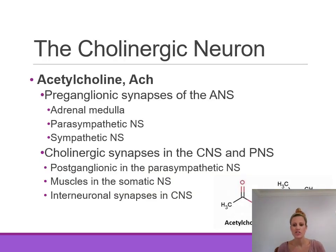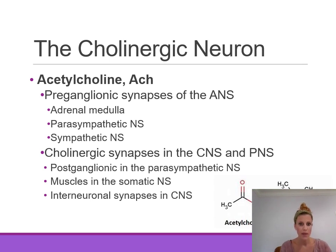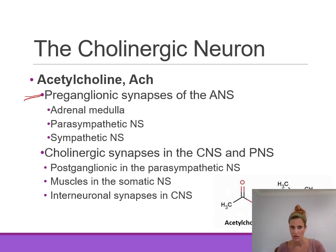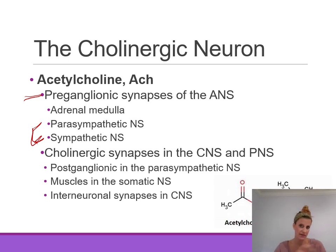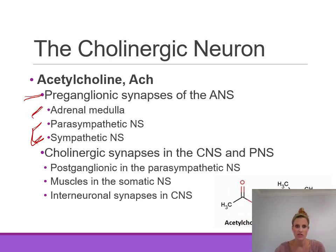A cholinergic neuron refers to a neuron that utilizes acetylcholine as its neurotransmitter. All preganglionic synapses in the autonomic nervous system utilize acetylcholine — it doesn't matter whether it's the parasympathetic or sympathetic nervous system. Both utilize acetylcholine at the preganglionic synapse. The postganglionic synapse at the effector cell is a different story. This also includes innervation of the adrenal medulla.